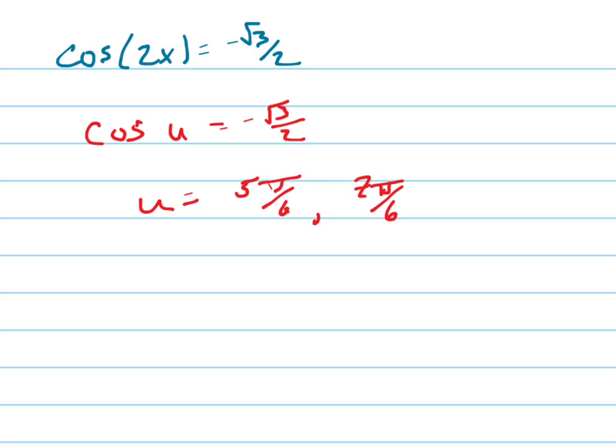But it doesn't say the cosine of x, it says the cosine of 2x. So this is what we do, we just change this to 2x. So 2x has to equal 5 pi over 6 and 7 pi over 6, which means x has to equal 5 pi over 12 and 7 pi over 12.